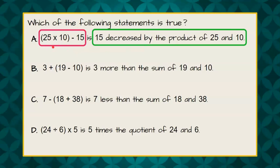So when we see this numerical statement, the first thing we want to do, order of operations, we're going to do our parentheses first. 25 times 10 is 250. Then we're going to subtract the 15. 250 subtract 15 is 235.